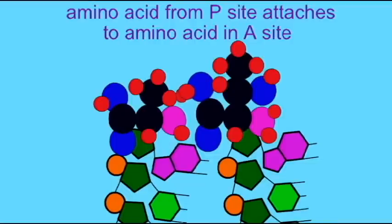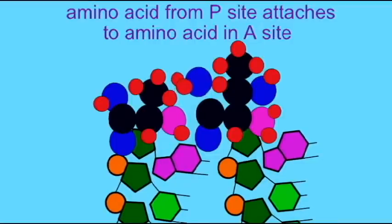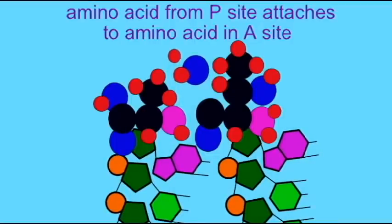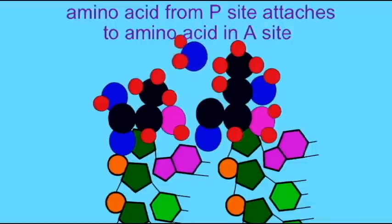The large subunit of the ribosome uses its rRNA to form a peptide bond between these two amino acids, and the amino acid from the P site attaches to the amino acid that is in the A site.